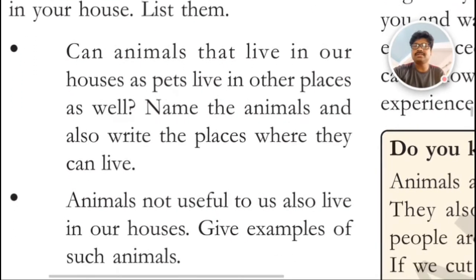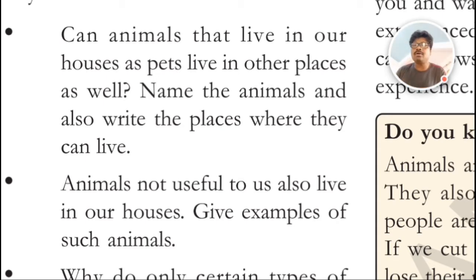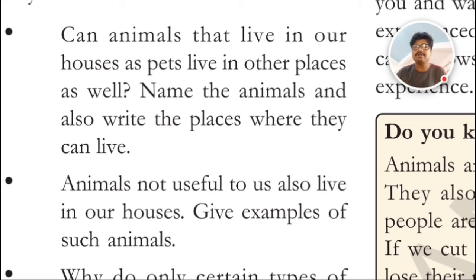Can animals that live in our houses as pets also live in other places? Yes, of course. Some animals living in our houses as pets may live in other places, like streets. Some dogs roam on streets — those dogs are called stray dogs. Stray dogs are dogs not taken care of by anyone. Some cats also live in forests. But some dogs and cats are looked after by human beings in our houses, so our house is a habitat for those animals.